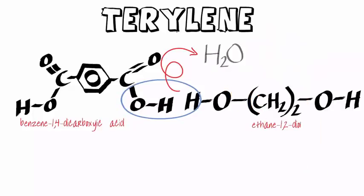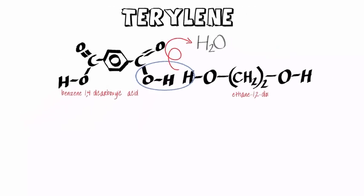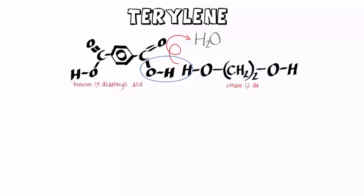Over at the other side, the H comes off the hydroxyl group, but it leaves its electron behind and comes off therefore as a hydrogen ion. And the hydrogen ion and hydroxide ion form water.